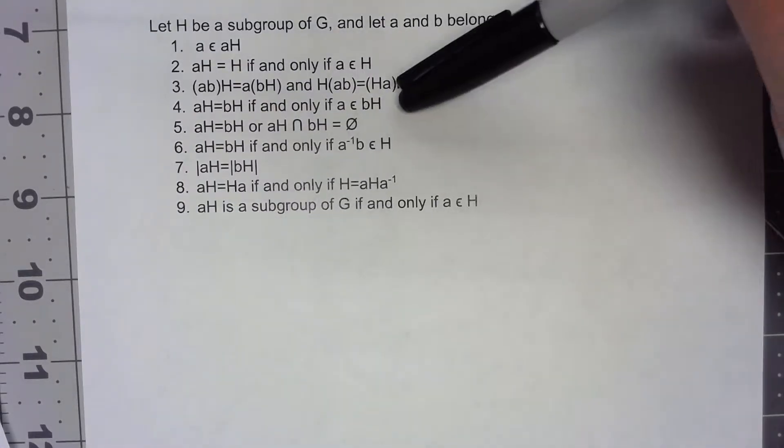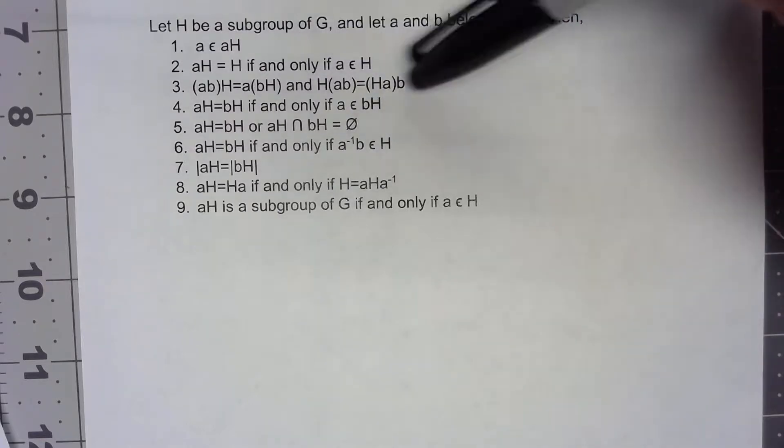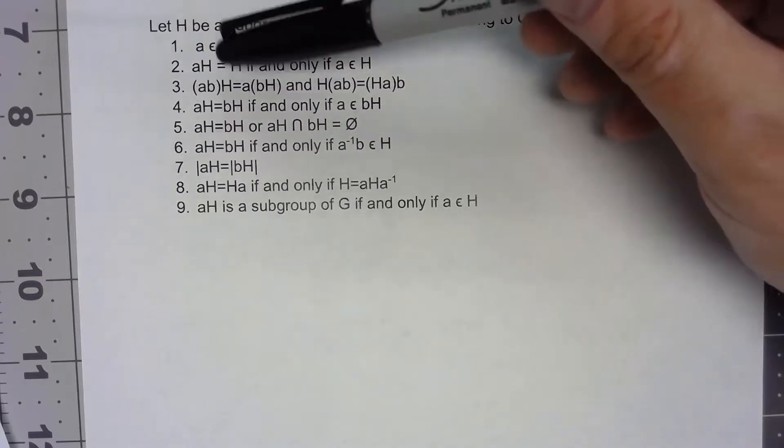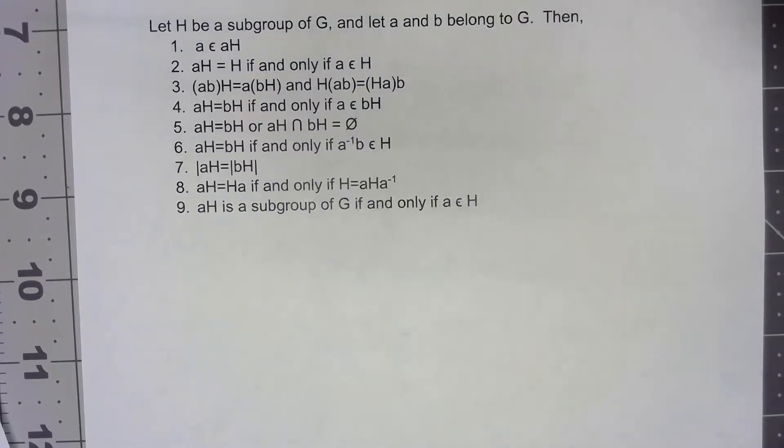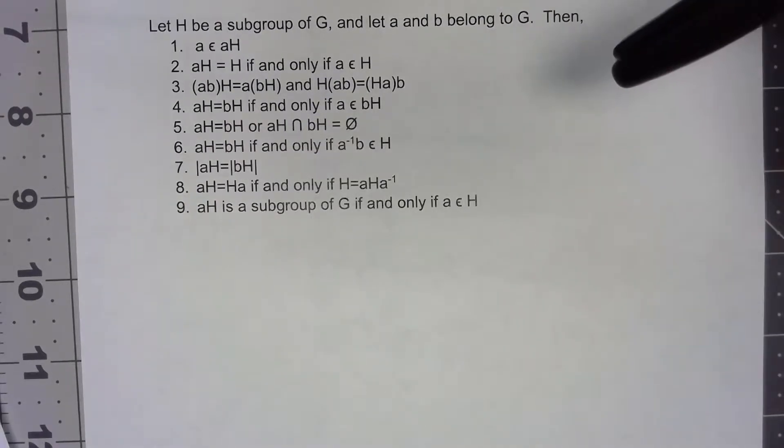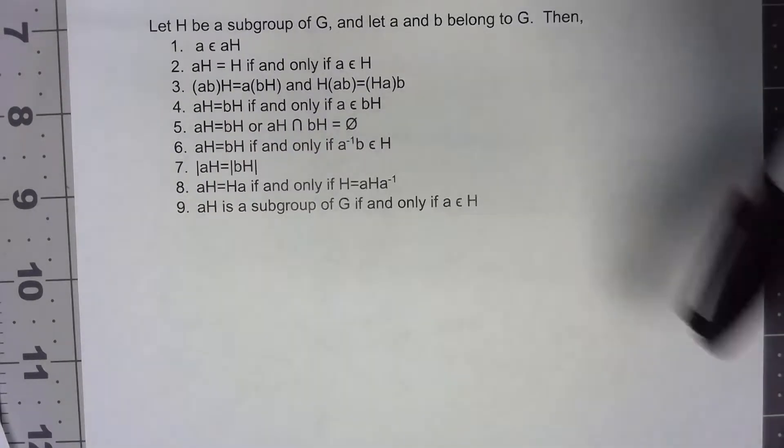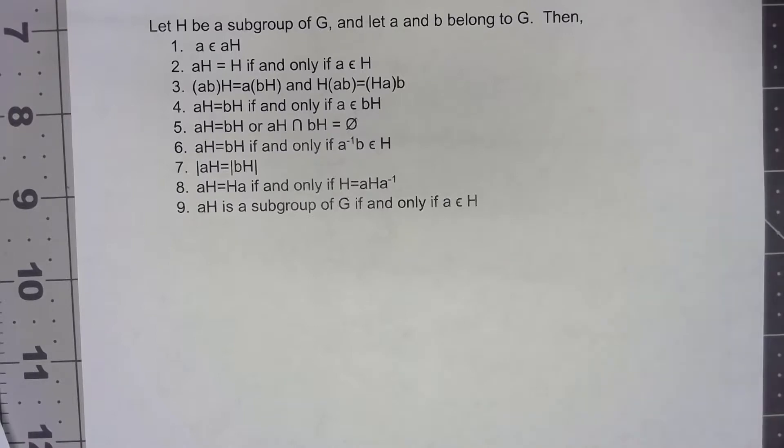We've got an associative kind of property for cosets. Those three properties I think you should try to prove yourself. They're all fairly basic if you go back to what the definition of a coset actually is.